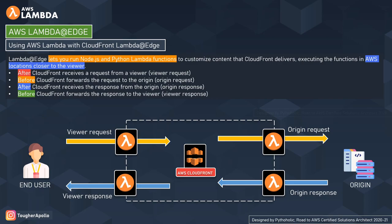The origin response function does not execute in two conditions: first, when the requested file is in the CloudFront cache and has not expired; second, when the response is generated from a function triggered by an origin request event. The fourth event is viewer response — an outgoing response. It triggers the Lambda code before CloudFront forwards the response to the viewer, and the function executes regardless of whether the file is already in the CloudFront cache, since it has been explicitly triggered by the developer.